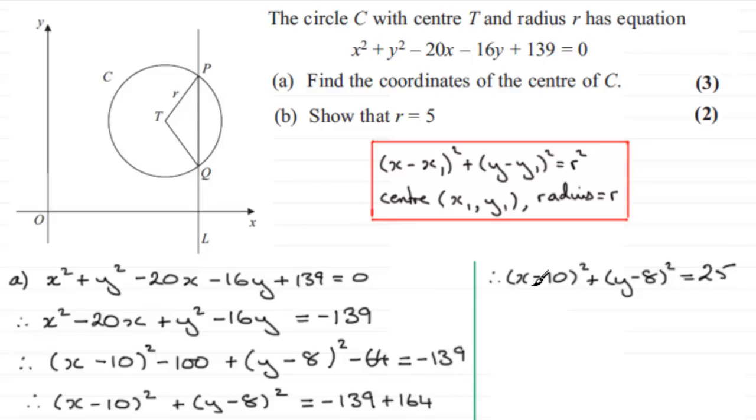So you can see that this is now in this format. And we can read off then for part A what the coordinates of the centre of the circle C are going to be. So we can say that therefore the centre is going to have coordinates (10, 8) by looking at and comparing it with this format. So centre (10, 8).